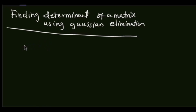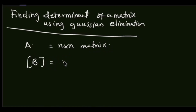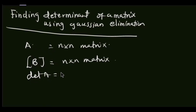To find the determinant of this 3x3 matrix, we make good use of the theorem that if you have a matrix A, which is an n by n square matrix, and you have a matrix B, which is also an n by n matrix, but B was formed as a result of adding or subtracting a row to another row of matrix A, then the determinant of A is simply equal to the determinant of B. That is, the determinant wouldn't change. That is the first theorem.